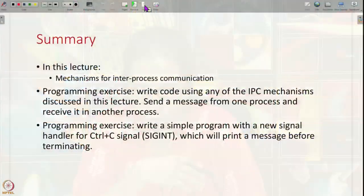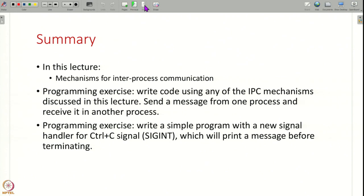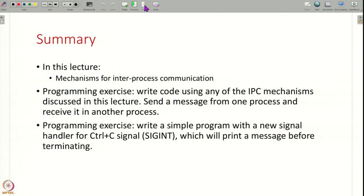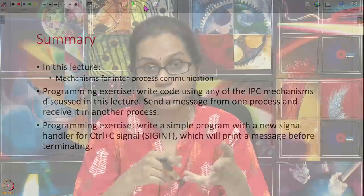In this lecture we have studied many different IPC mechanisms, though more exist. As a programming exercise, try implementing a producer-consumer with processes using message queues or shared memory, and understand which mechanism is suitable in which situation. You can also write custom signal handlers — by default Ctrl+C terminates a program, but you can write a handler that prints a message instead. Experiment with simple programs to understand how signals work. That is all for this lecture; we will continue in the next one.